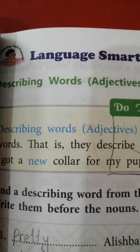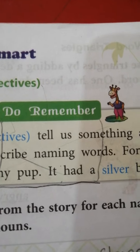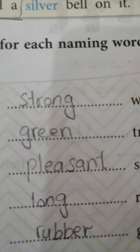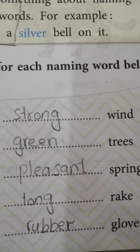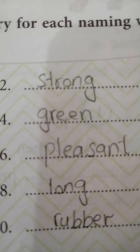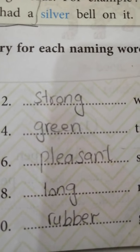Once again, describing words tell us something about naming words. Alishwa, leaves, autumn, movies, basket, wind, trees, spring, rag, and gloves — these are the nouns, the naming words. And all the other words are describing them — they are called describing words, or adjectives.